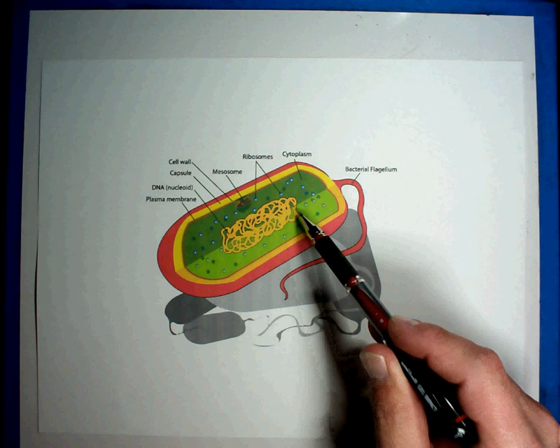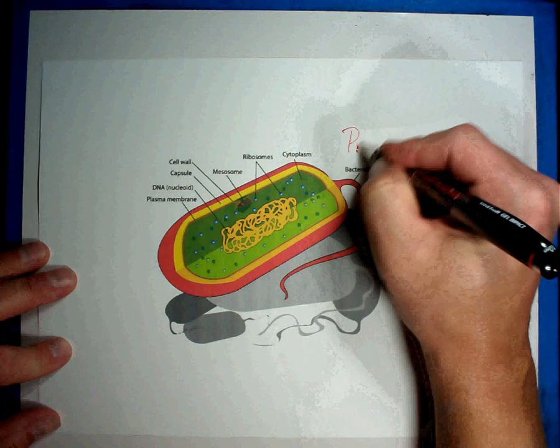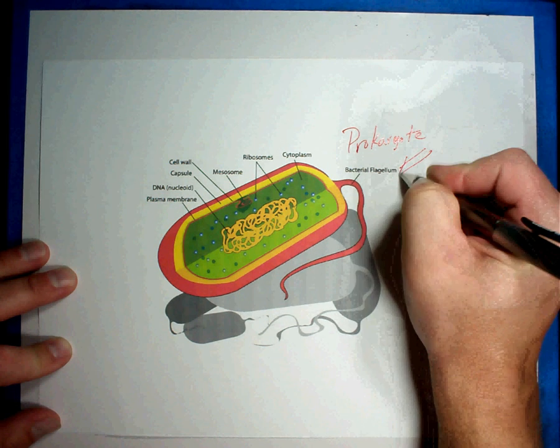They don't have a nucleus. That's why they're going to be prokaryotes. If you'll remember humans and other cells, we're eukaryotes. This one is a prokaryote. I'll write that word so make sure you have it. That's what these things are. They're prokaryotes.